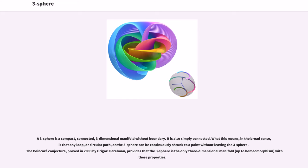on the three-sphere can be continuously shrunk to a point without leaving the three-sphere. The Poincaré conjecture, proved in 2003 by Grigori Perelman, provides that the three-sphere is the only three-dimensional manifold with these properties.